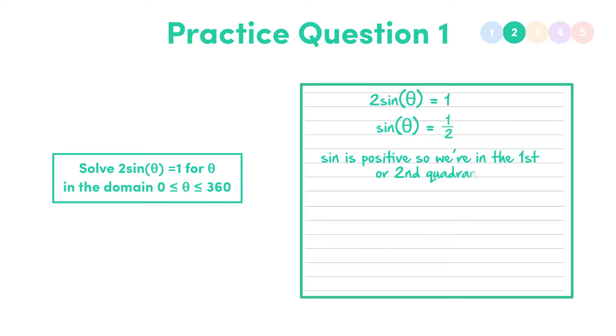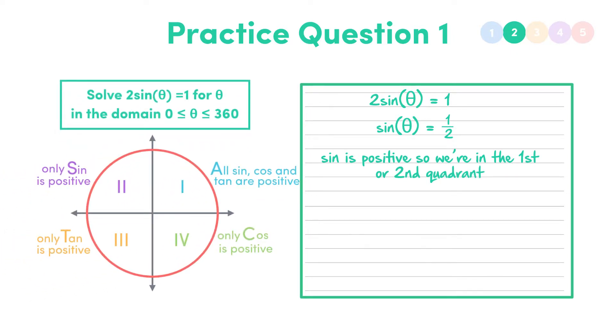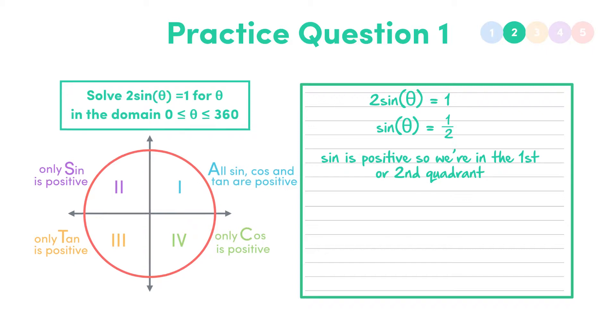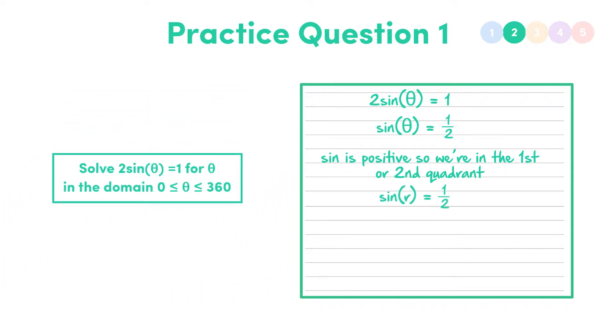Sine is positive, so our angle is in the first or the second quadrant. Remember, All Students Take Calculus. Then, our reference angle gives sin r is equal to a half. So r is equal to the inverse sine of a half, which equals 30 degrees. So that means theta is equal to r or 180 minus r. So theta equals 30 or 150.